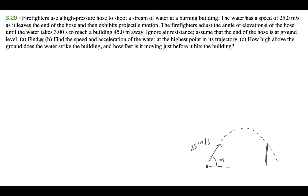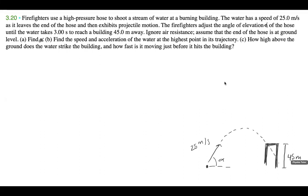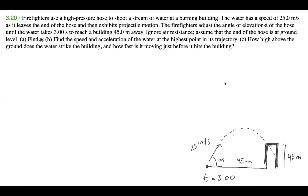If we're given information that's contradictory, we can go ahead and change that. This building is 45 meters away, and it takes about three seconds to get from this point all the way to reach it. We want to assume that the end of the hose is at ground level — we're not on a cliff or another building, we're on the ground.